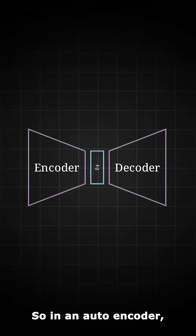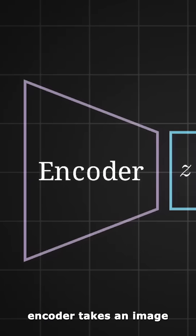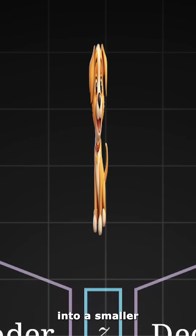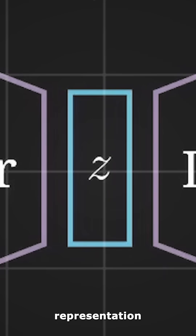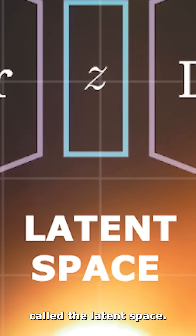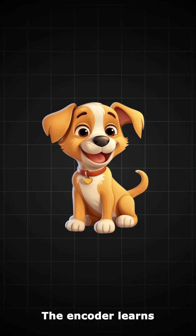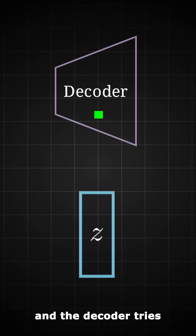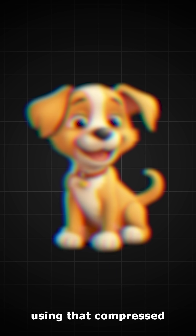So in an autoencoder, the encoder takes an image and compresses it into a smaller representation called the latent space. The encoder learns the key features of the image and puts that into the latent space, and the decoder tries to reconstruct the original image using that compressed code.